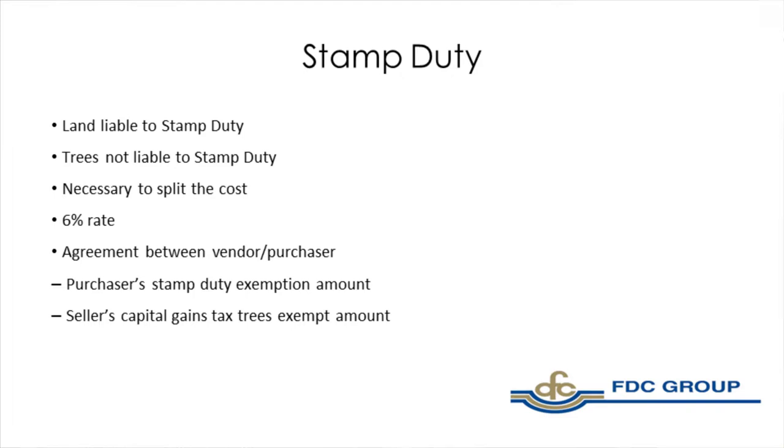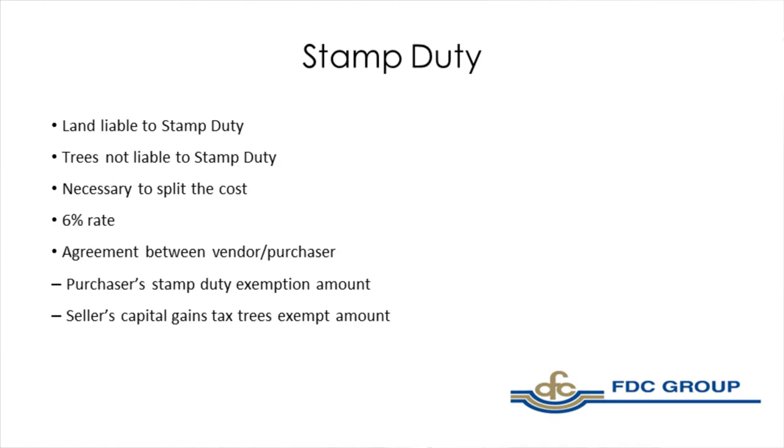One point to make is, say you're selling the forestry lands to a third party where there's no connection. There could be a temptation by either party — say if you're the purchaser — to show more of the value made up of the standing timber to get more of an exemption. But if the purchaser is getting one valuation apportioning it and the seller is getting a separate valuation and the apportionment between the two are not matching up, the Revenue Commissioners will see that straight away. So just a small bit of dialogue between the seller and the purchaser is needed. It's a lot more straightforward where it's a transfer to a son or daughter — it will be the one valuation. A small point, but very, very important.